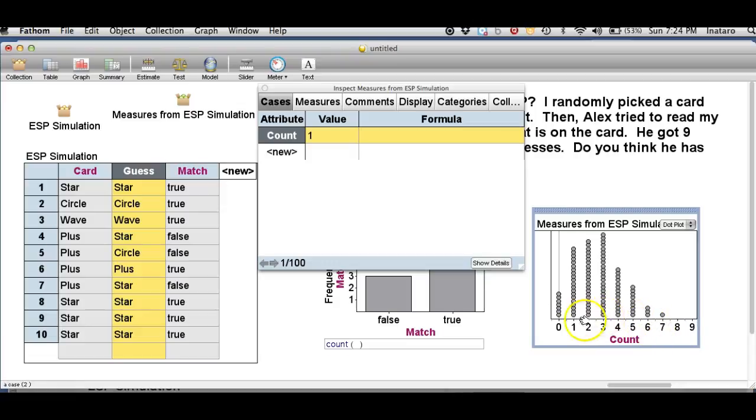As a matter of fact, the most common outcome was three and we'd expect Alex to get about 25% right by guessing alone. So on average, he should get 2.5 right by guessing alone. He, clearly, can read minds.